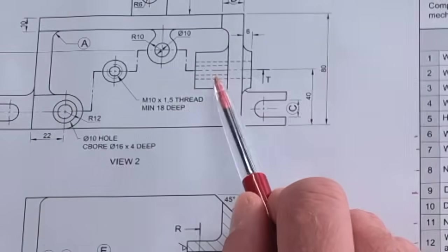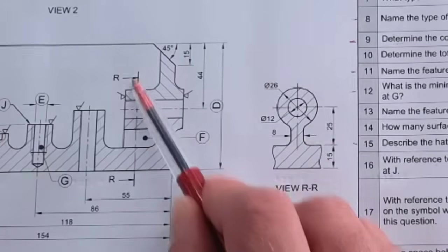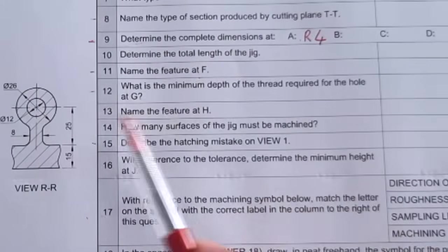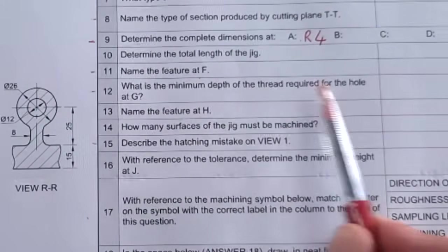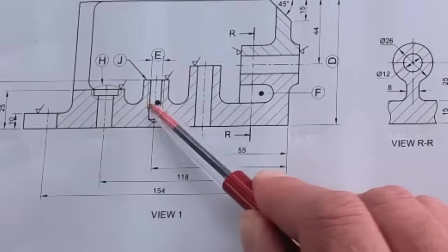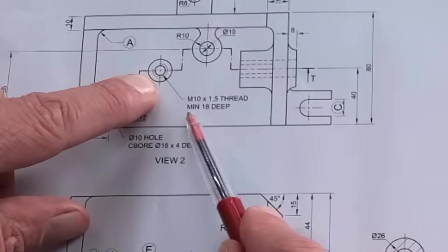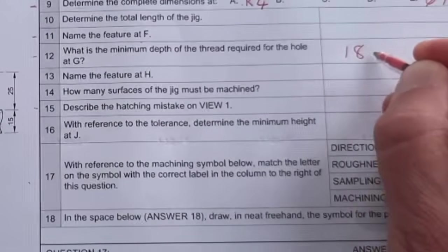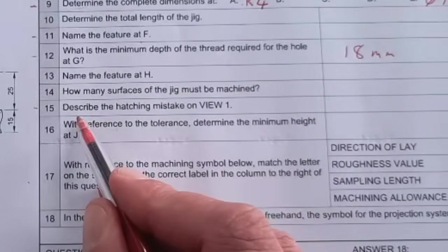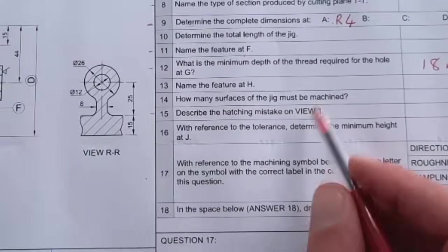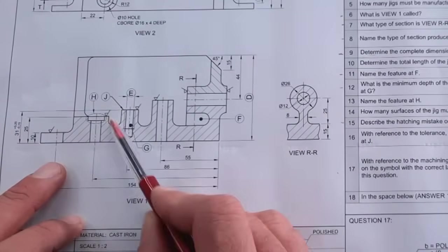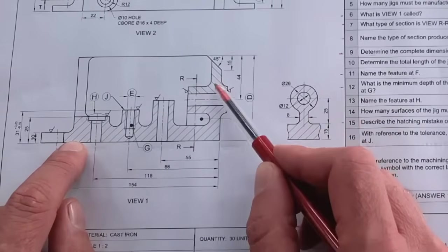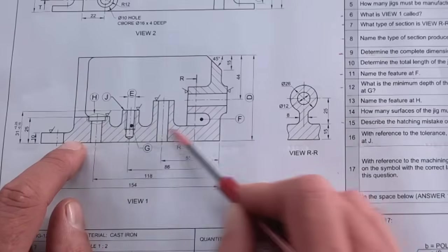Then we're going to skip number 10. Name the feature at F. If you look at that, now this is a question common in grade 10, and so they can also still ask this in grade 12. Remember, it covers all the work that you've done from grade 10 to 12 in your final paper. If you look at the top view, it gives you some direction, as well as this view RR. If you look there, cut through that, that is a rib or a web for F there. And then what is the minimum depth of the thread required for the hole G? So find G there. You can see now for that, you're going to have to look at the top view again. There it's specified: M18, minimum 18 deep. So that's going to be 18 millimeters. Number 15: describe the hatching mistake on view one. So we have to go investigate view one. We can see here that all the hatching is in one direction, and then it changes. Now the fact is, this is one casting, so the hatching should be similar in all parts of this. So it's hatching in opposite direction would be your answer there at view one.